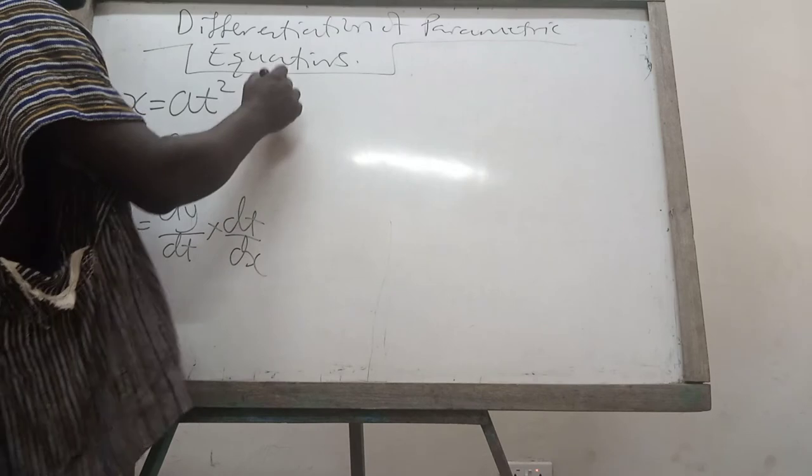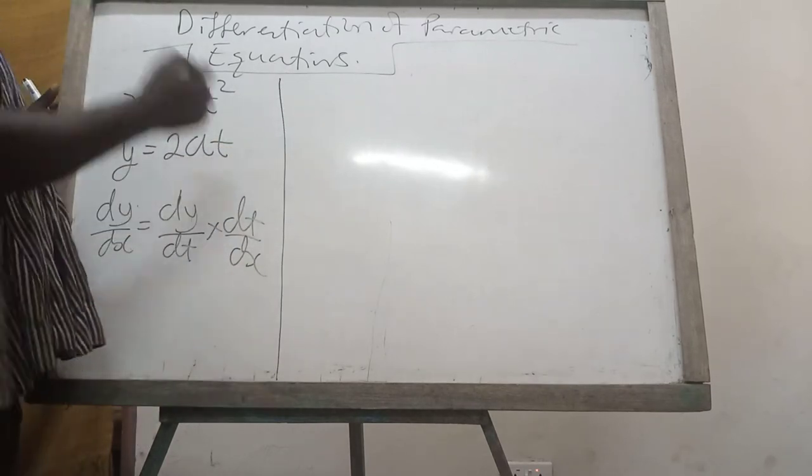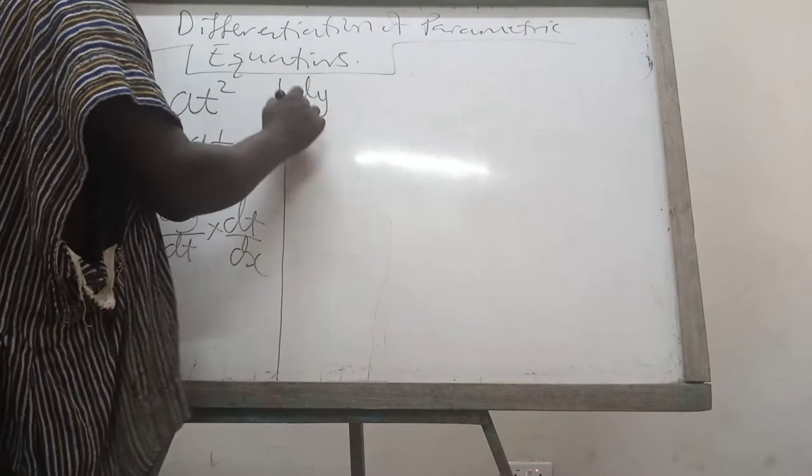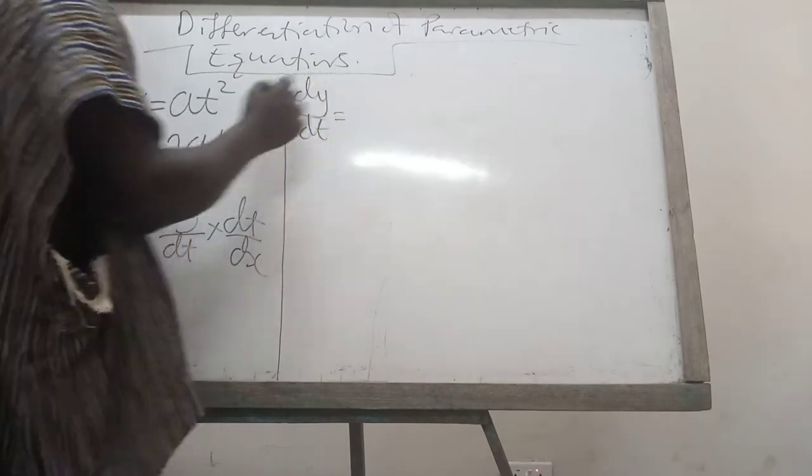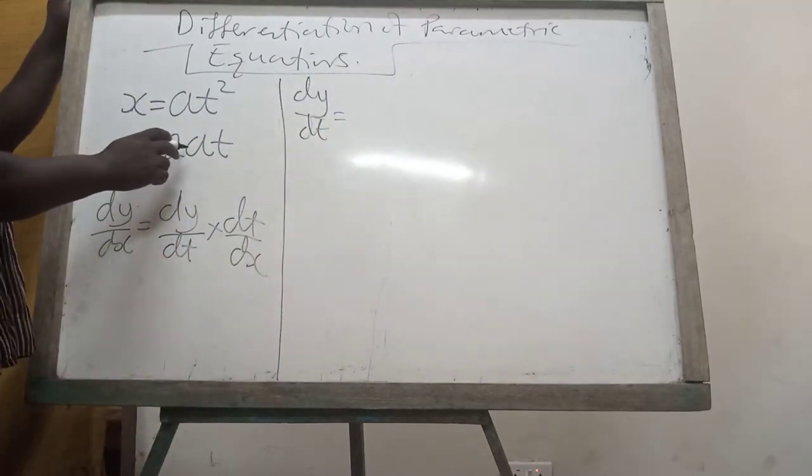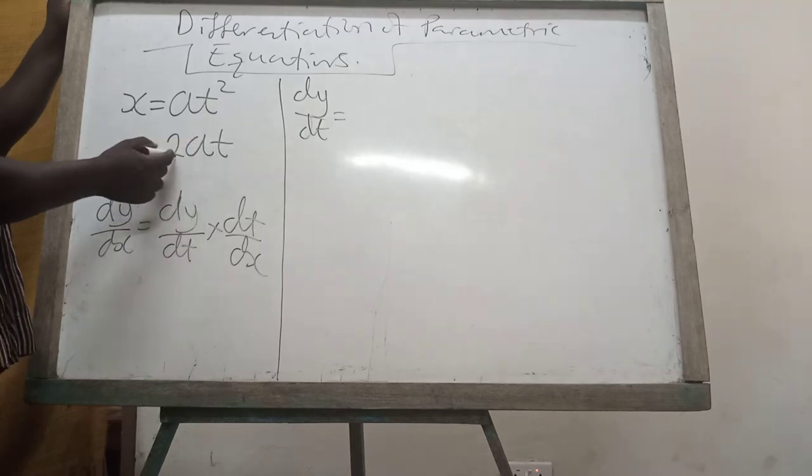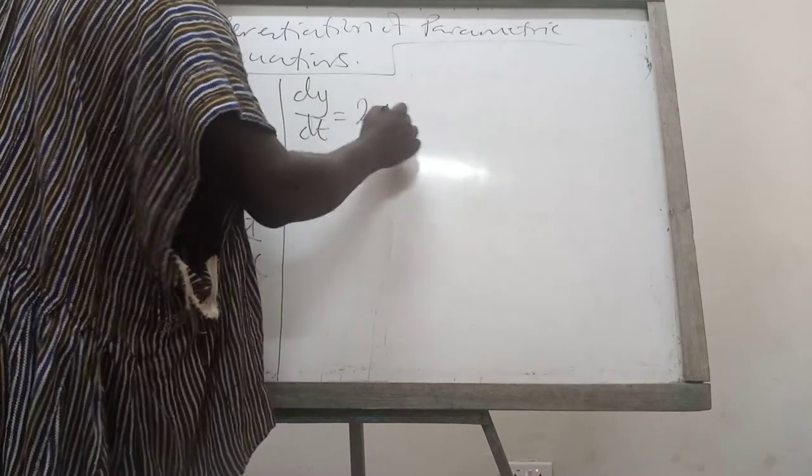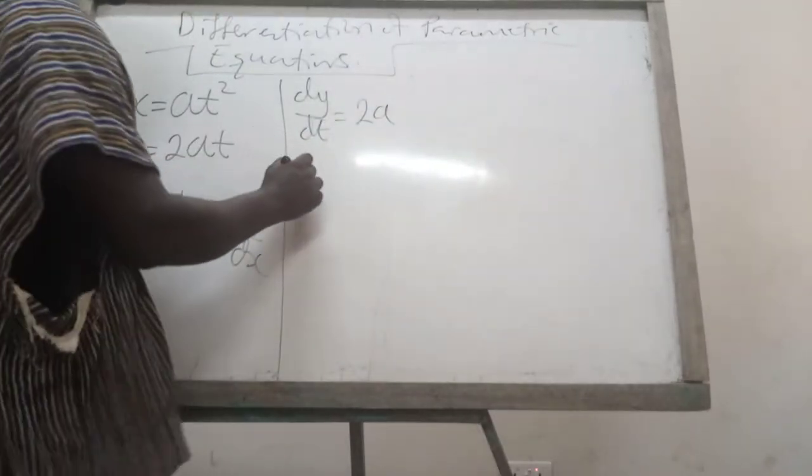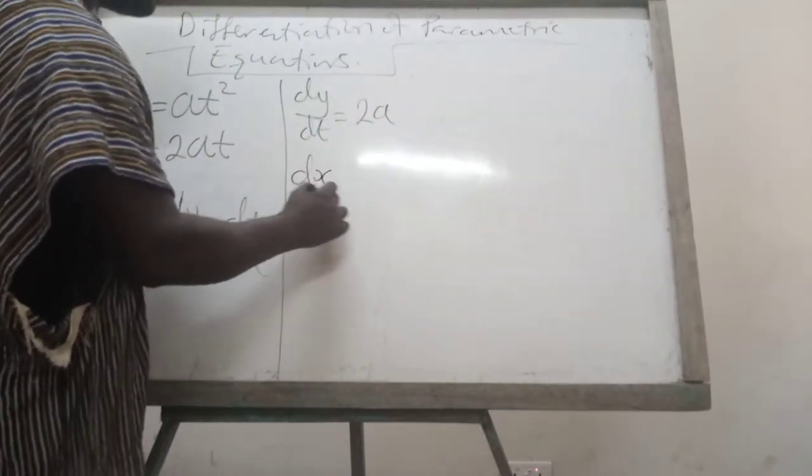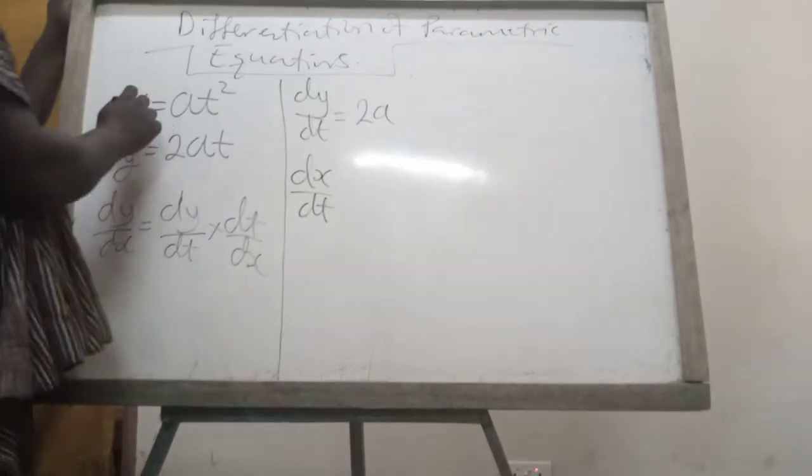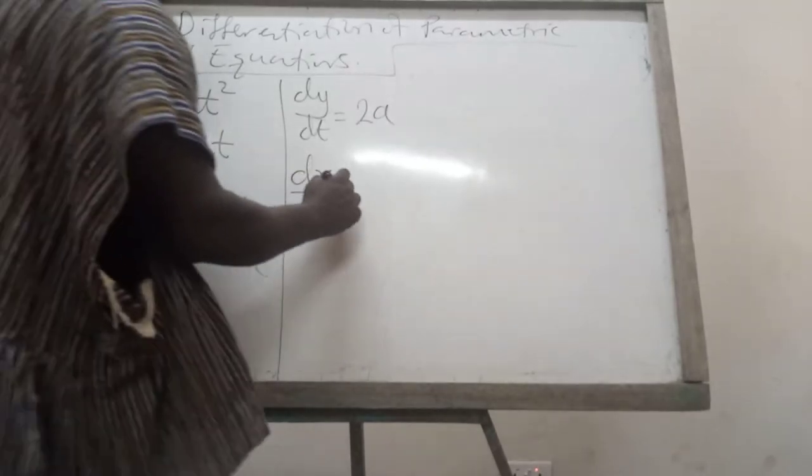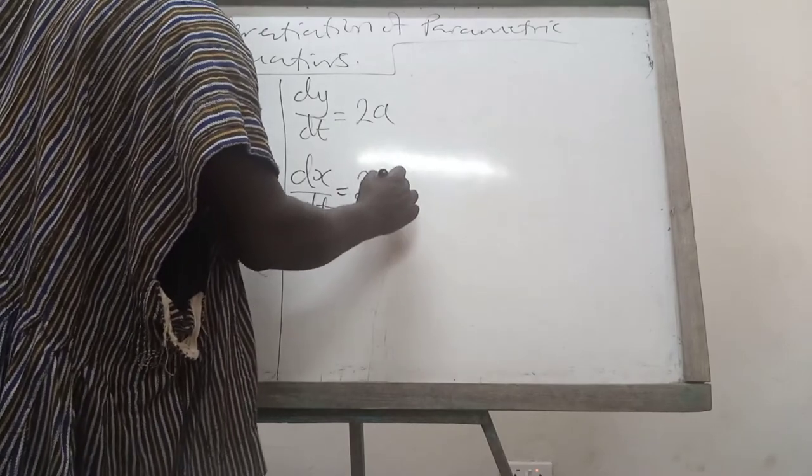So what we are going to do now is to find dy/dt and then dx/dt. dy/dt is going to differentiate this y. When you differentiate this with respect to t, you are going to get only 2a. Now dx/dt, that is differentiating the x part with respect to t, these two will come and multiply. So you get 2at.